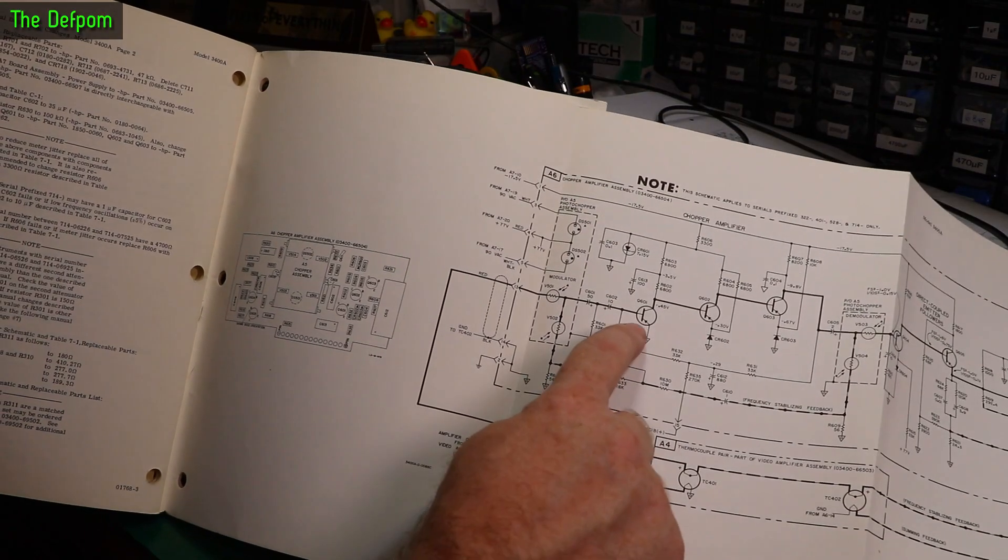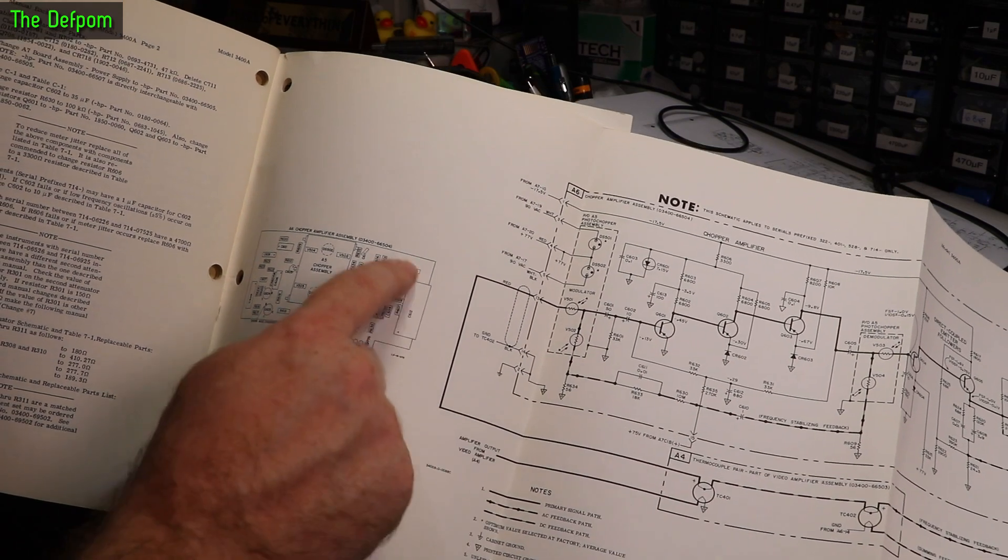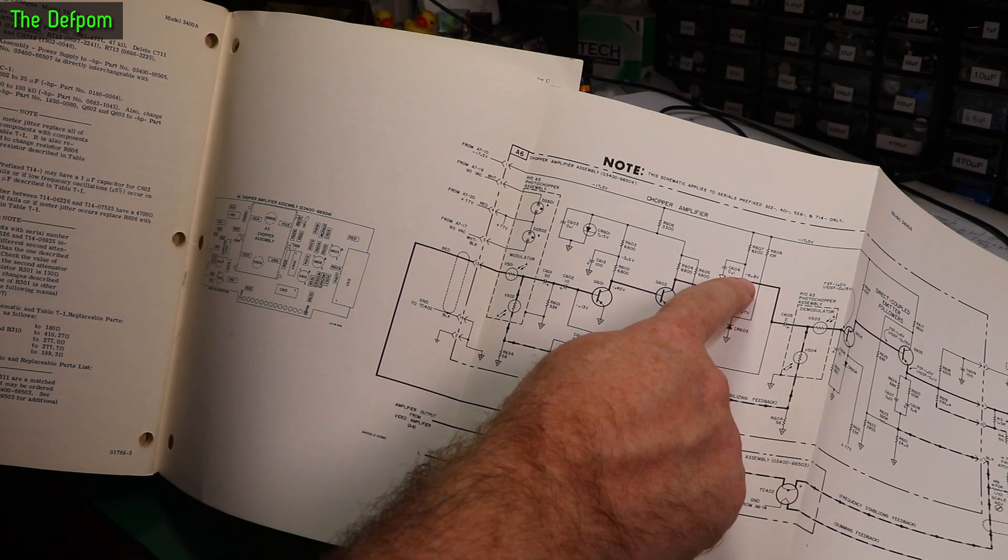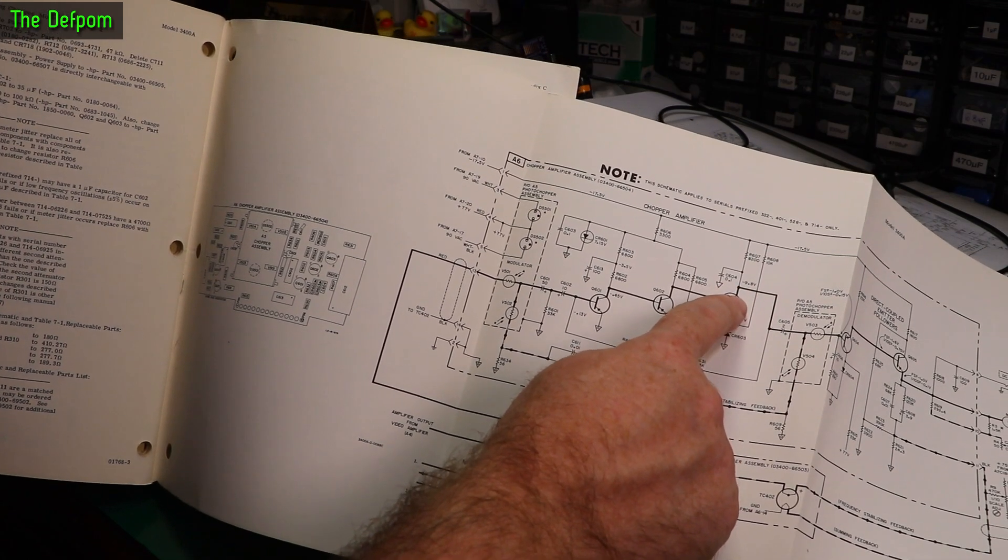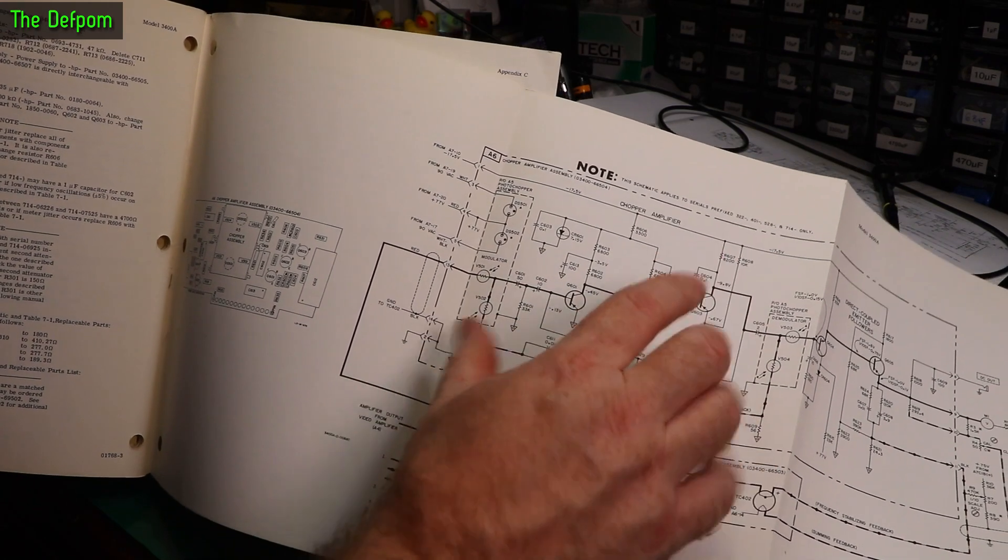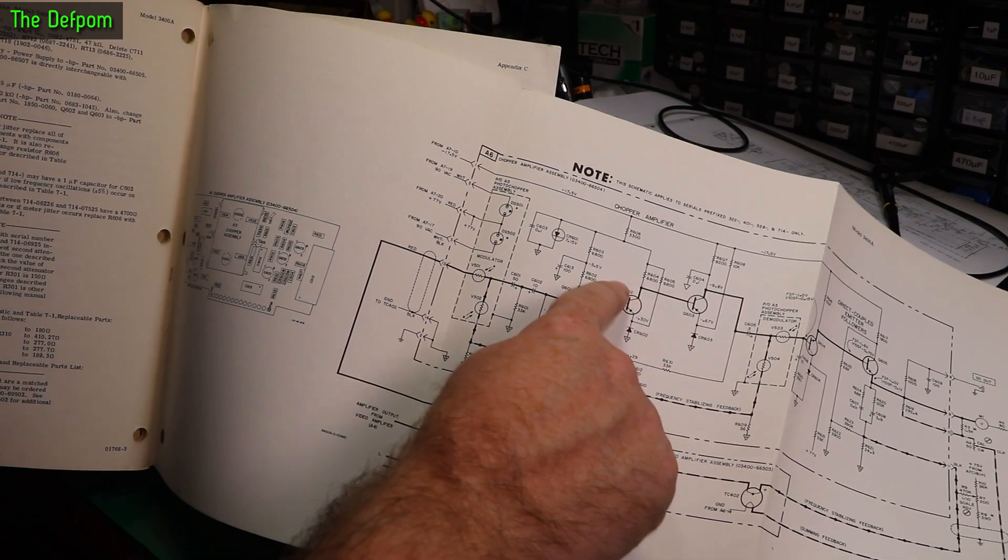So I've checked these transistors here so far. That's this group just there. They checked out okay, apart from the last one here which is measuring negative 9.3 volts. It says negative 9.8 volts here. The rest were basically right.